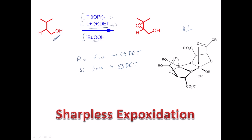Let's find the Re-face and Si-face for an example with +DET. You always look at the alkene carbon next to the OH group. To that carbon: the carbon bearing oxygen gets priority number one, the other carbon attached carbon gets priority number two, and hydrogen gets priority number three — following Cahn-Ingold-Prelog rules.